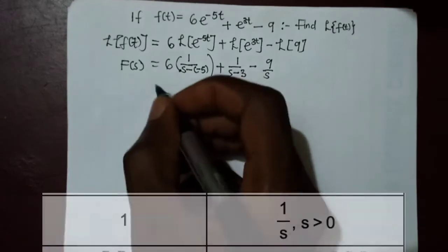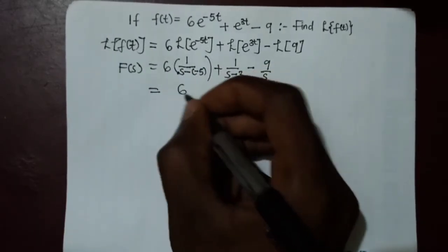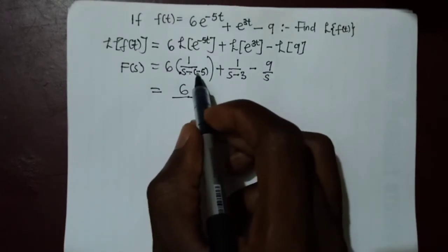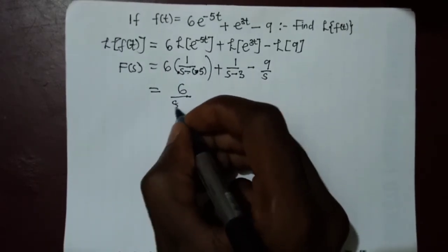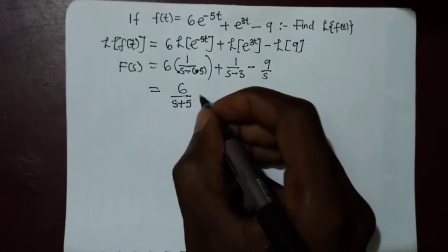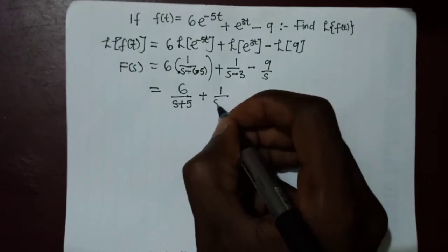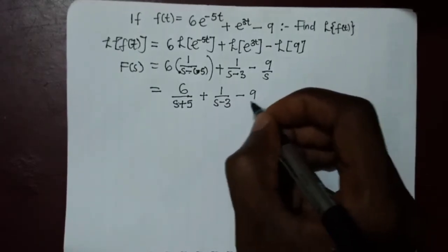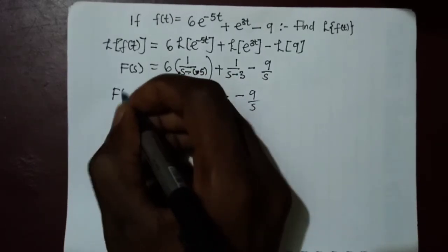Simplifying further: 6 × 1/(s+5) = 6/(s+5), since negative minus negative gives positive. So we have 6/(s+5) + 1/(s−3) − 9/s. This is our new function F(s).